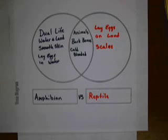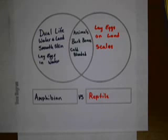Let's talk about their commonalities first. They're both animals, they both have backbones — they're vertebrates — they're cold-blooded, and they have bilateral symmetry.